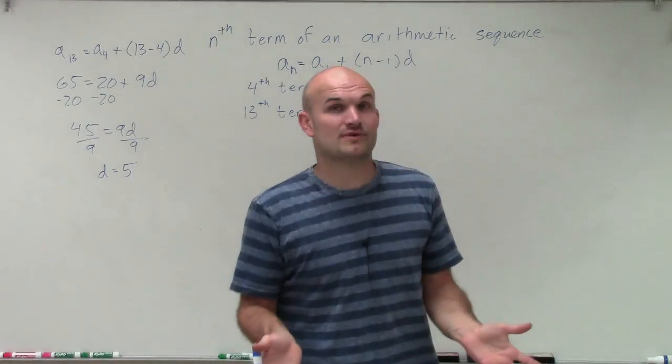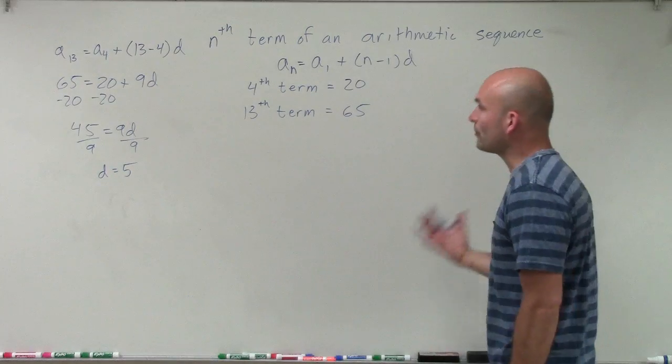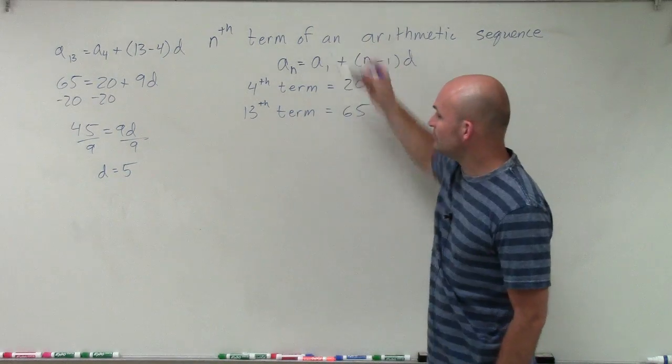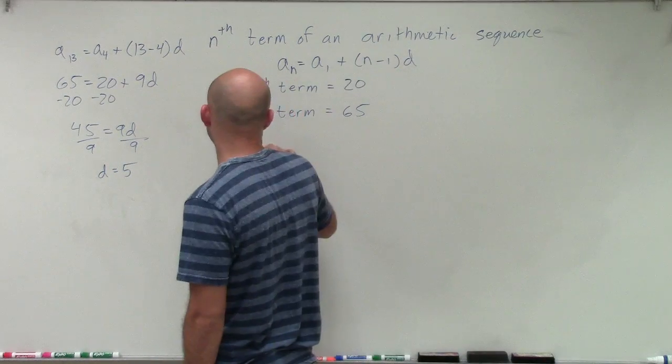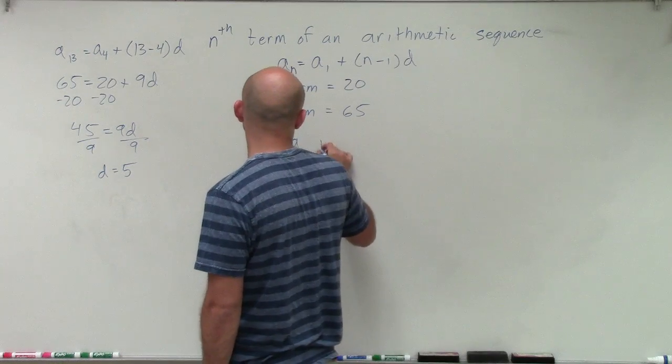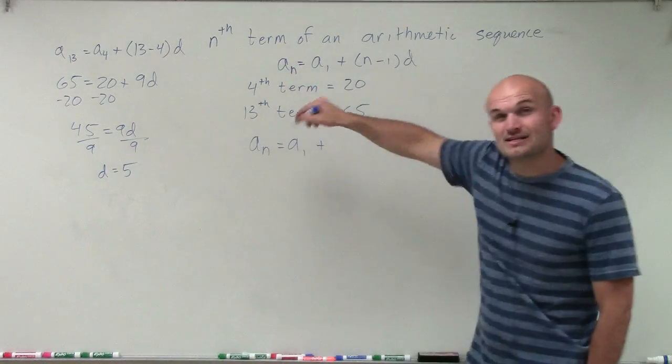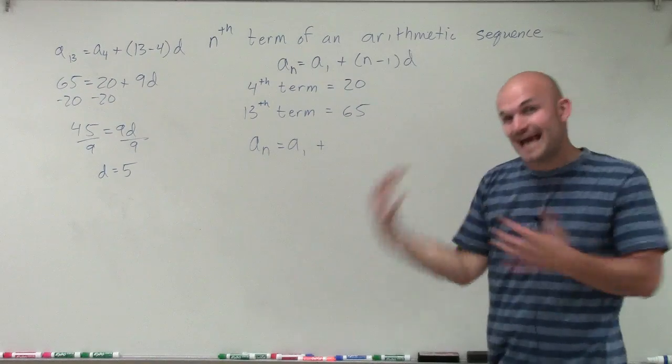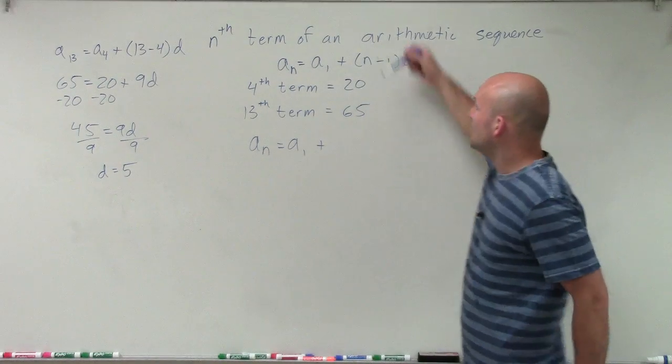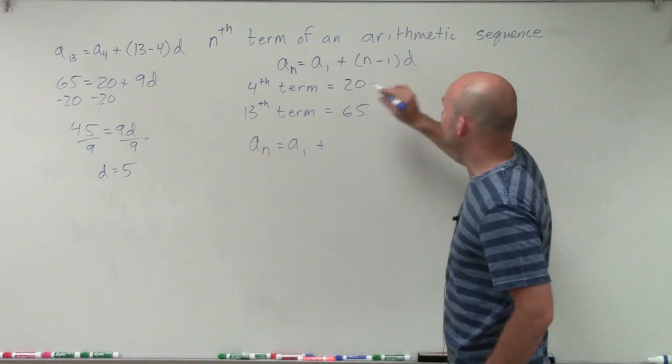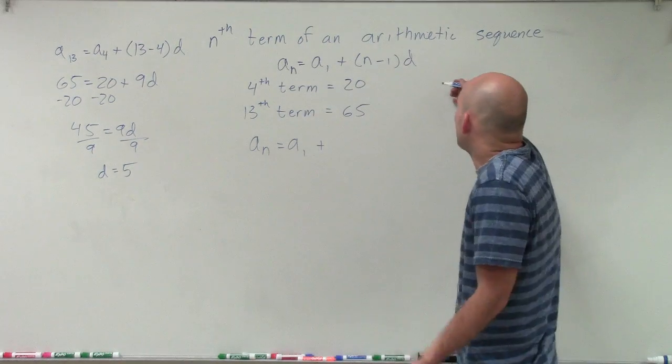So now I know the common difference. However, there's a little bit of a problem, because to write this formula, if I want to find the formula, it needs to be a sub n equals a sub 1. So I need to figure out what is my a sub 1. Now we can do this exact same process again. This time, now that we know d, we could say, all right, I need to figure out, let's say I know a sub 4.